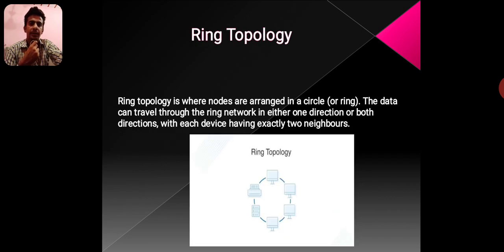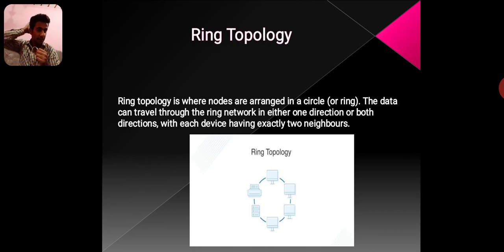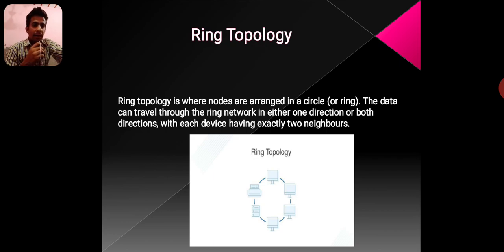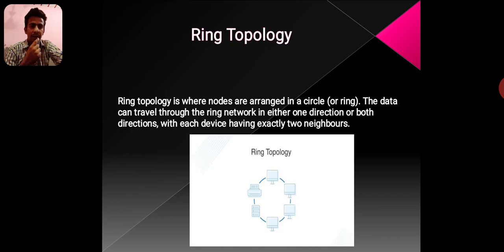Ring Topology. Ring topology is where nodes are arranged in a circle or ring. The data can travel through the ring network in either one direction or both directions, with each device having exactly two neighbors.